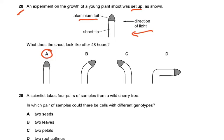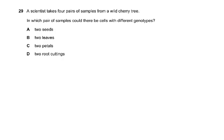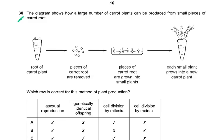Question 29: A scientist took four pairs of samples from a wild cherry tree. In which pair of samples would the cells have different genotypes? The leaves, petals, and root cuttings would all have the same genotype. It has to be the seed, because the seed is formed after fertilisation — that is when alleles are mixed and a new genotype is produced through sexual reproduction.